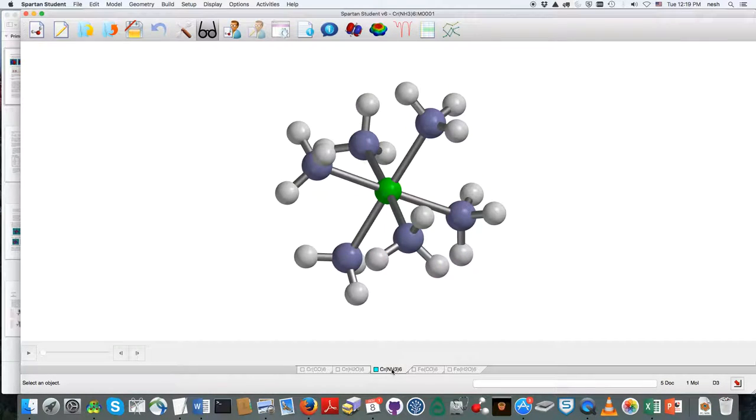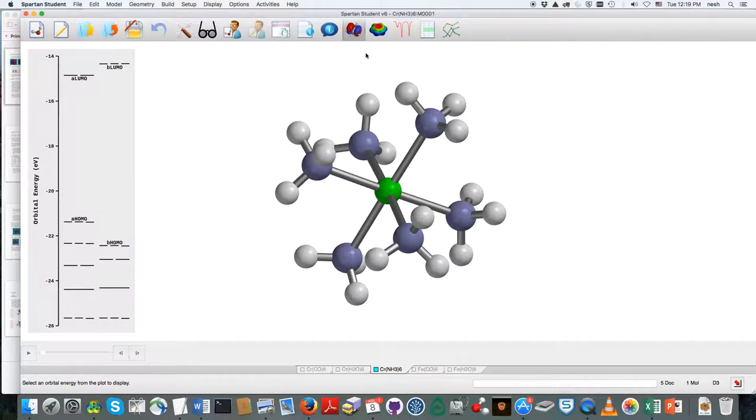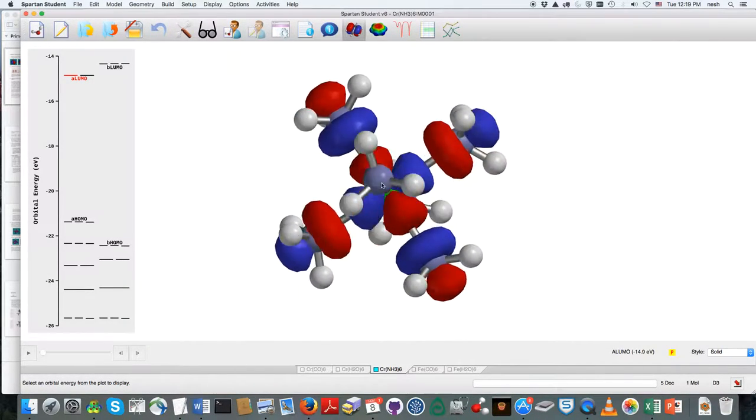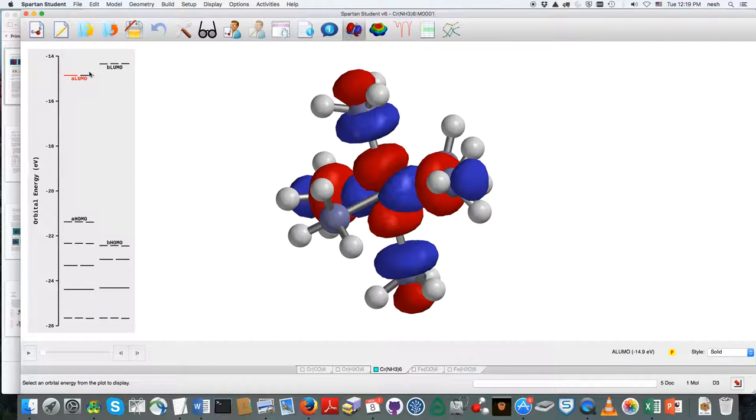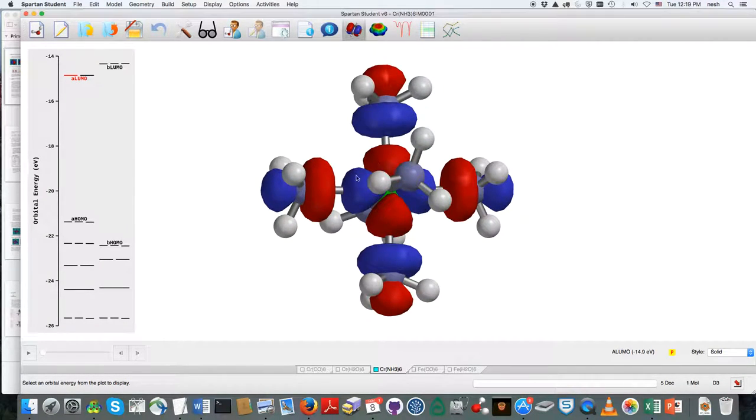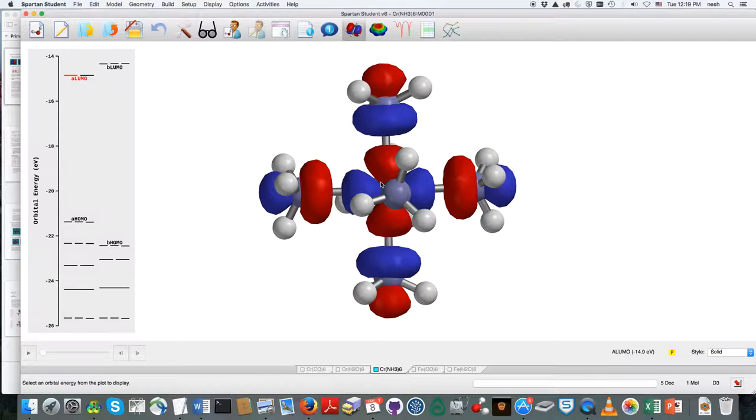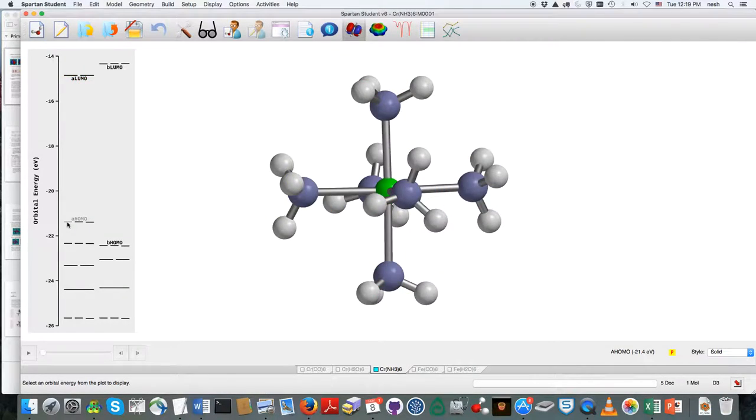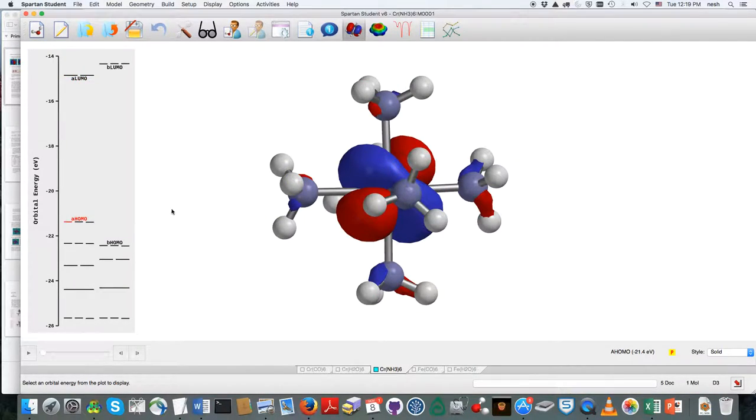And now if we go over to the ammonia complex and think about the same sort of thing there, well, once again, I'm here at the EG pair of orbitals, and that looks like a d-orbital right there in the middle, and I've got something that looks like a sigma star interacting with the ligands. If I drop down now to the T2Gs...